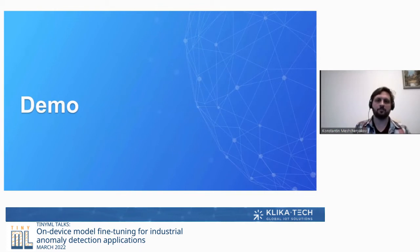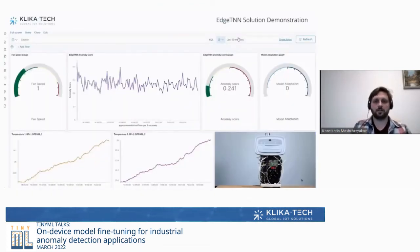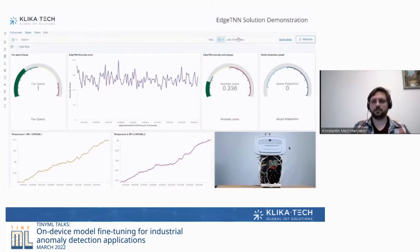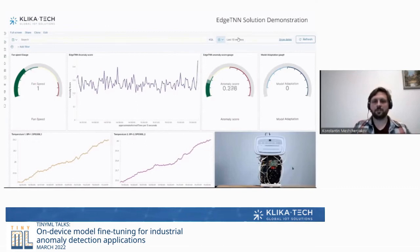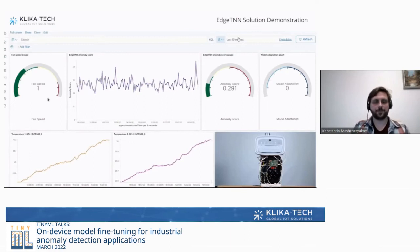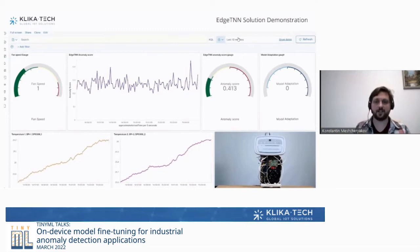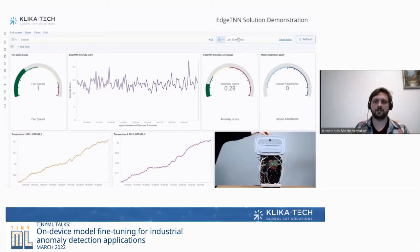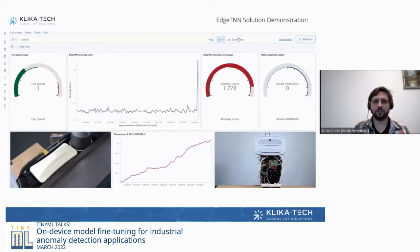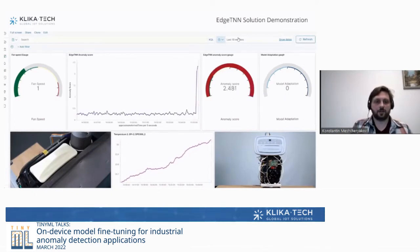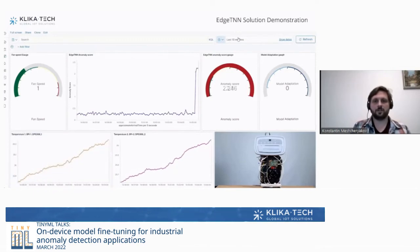Now I'll show a demo with actual hardware. In the lower right corner you can see the equipment — an air conditioning unit. You can see data from different sensors like temperature, the current operation mode, anomaly score, and whether the model is adapting. We introduce an anomaly by emulating exhaust clogging, preventing air from going out. We see a significant jump in the anomaly score — so it works on the device itself.